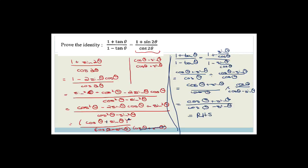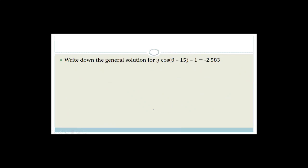Cancel the cos theta denominators — tip and times — and we get (cos theta plus sine theta) over (cos theta minus sine theta), which equals the right-hand side result. Identity proved. This is a typical question where you work down both sides independently and they meet in the middle.